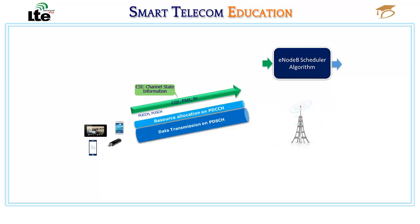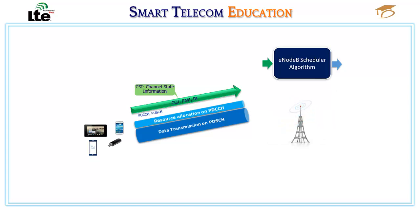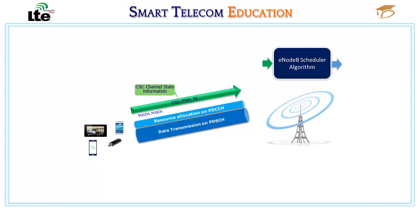Third, based on the scheduler decision, the E-NodeB sends the data over the air interface on PDSCH. How the data is transmitted is sent on PDCCH.